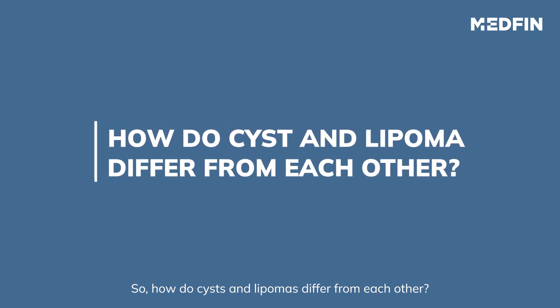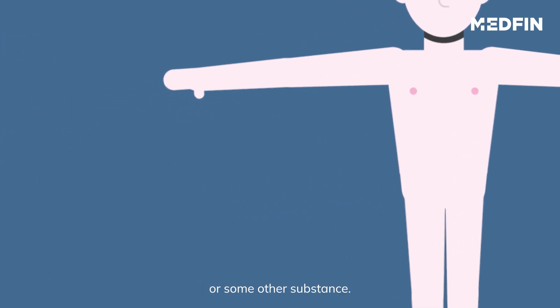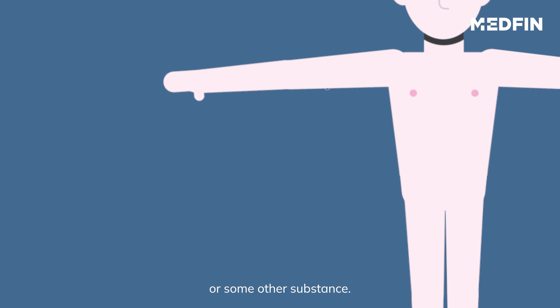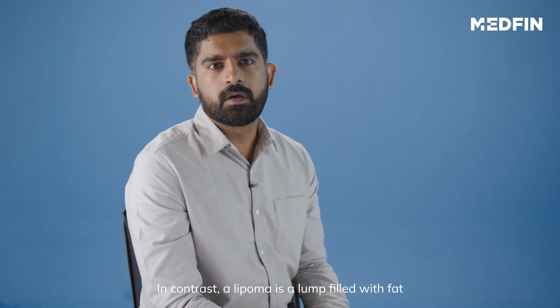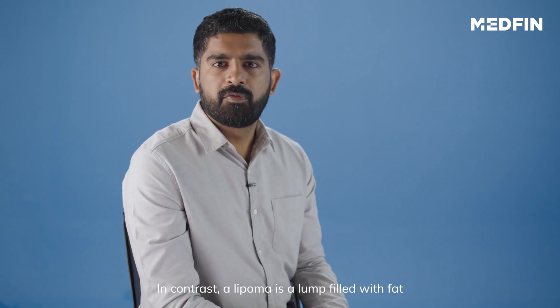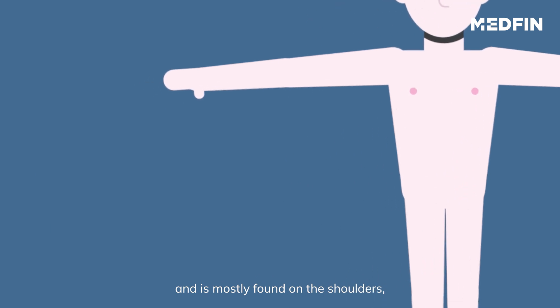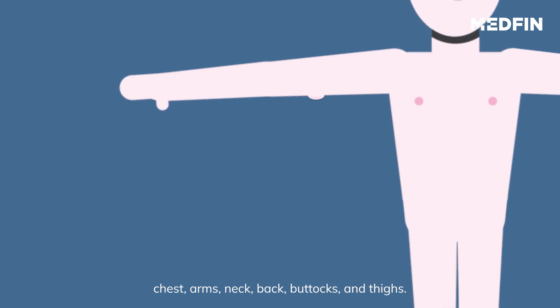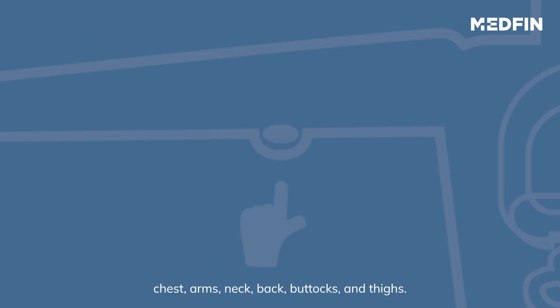How do cysts and lipoma differ from each other? An external cyst is a lump filled with fluid or some other substance. It is often found on the head or neck and it can be of various types. In contrast, a lipoma is a lump filled with fat and is mostly found on the shoulders, chest, arms, neck, back, buttocks and thighs.